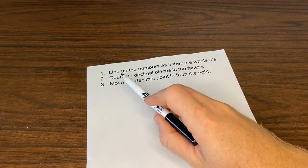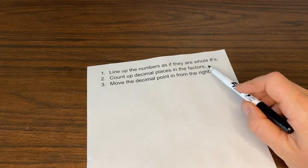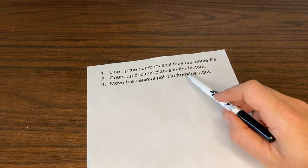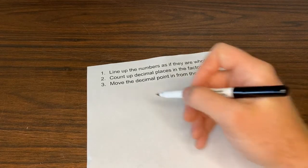When multiplying with decimals, you want to make sure you first line up the numbers as if they're whole numbers. You count up the decimal places in the factors and then move the decimal in from the right.